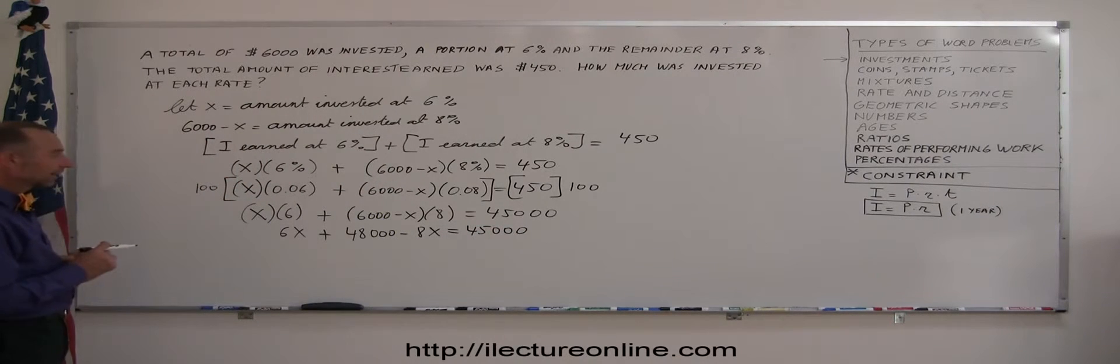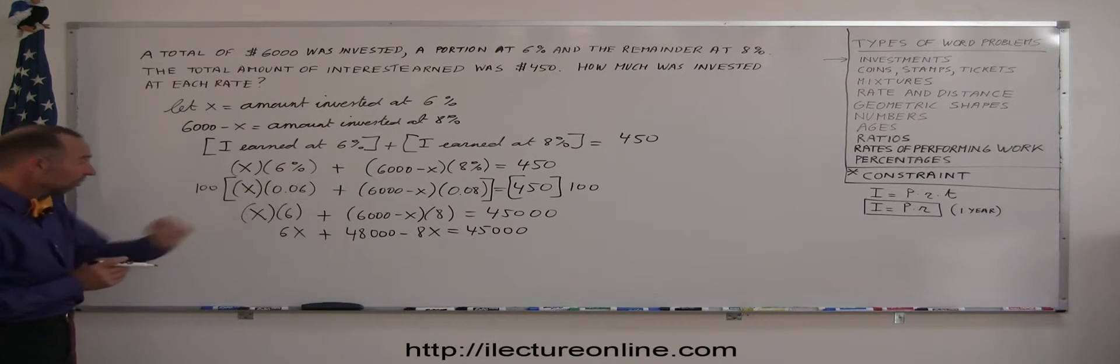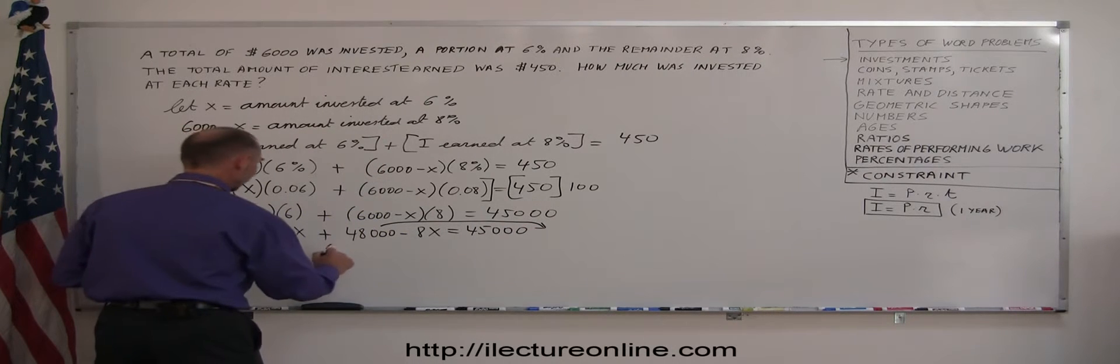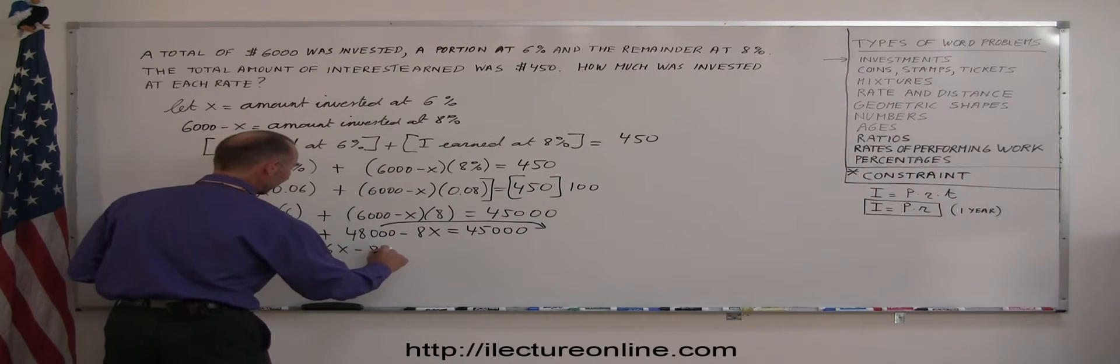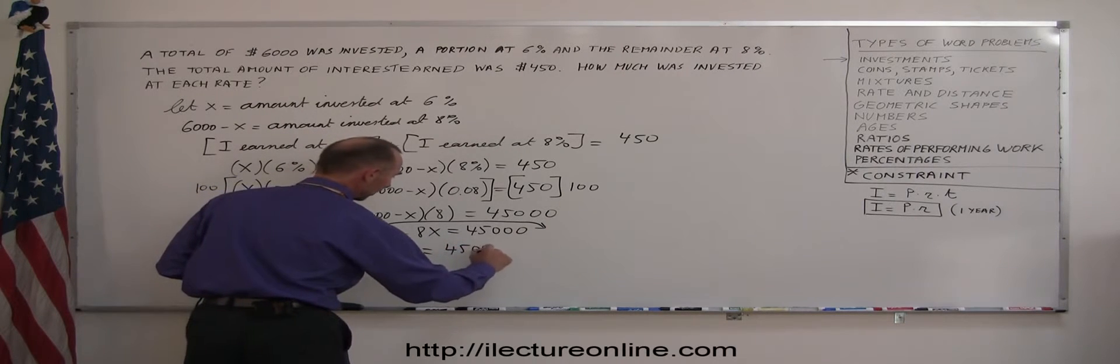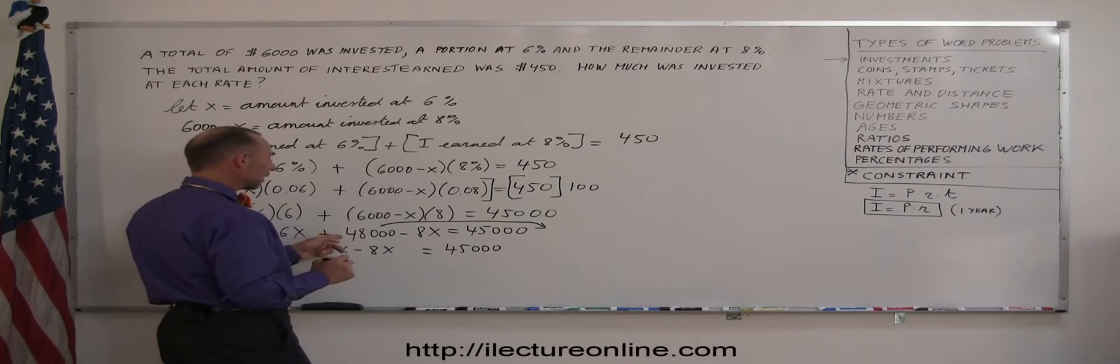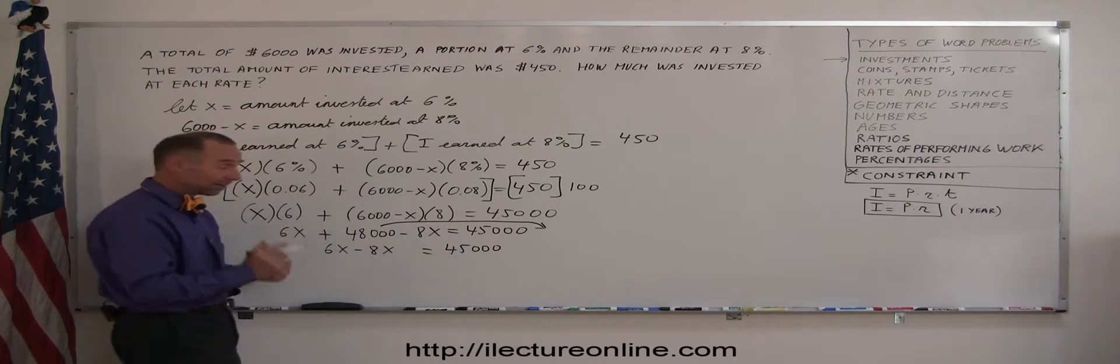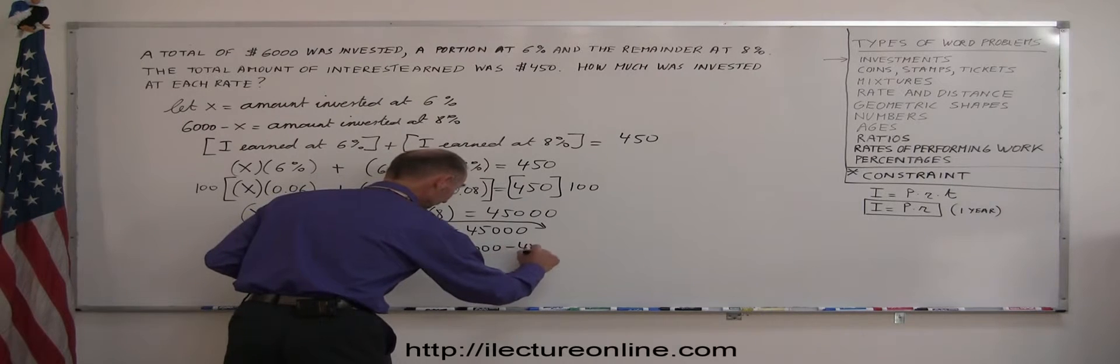All right, next thing I need to do is move everything that's not associated with an X to the right side. So I end up with 6X minus 8X on the left side equals 45,000. And when I move the 48,000 to the right side, I go across the equal sign, I have to change the sign, so that becomes minus 48,000.